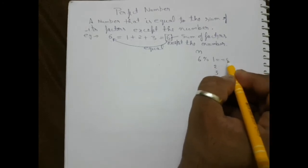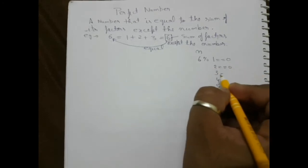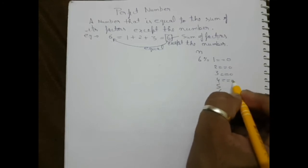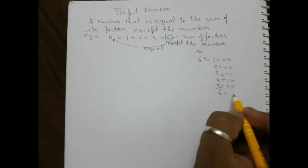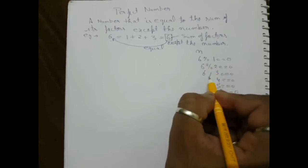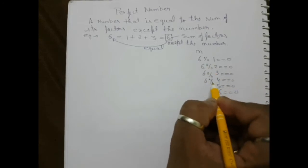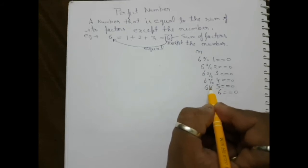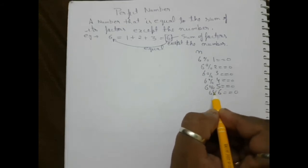If the remainder is zero, then the number will be called a factor. This is a common statement everywhere that we need to generalize.